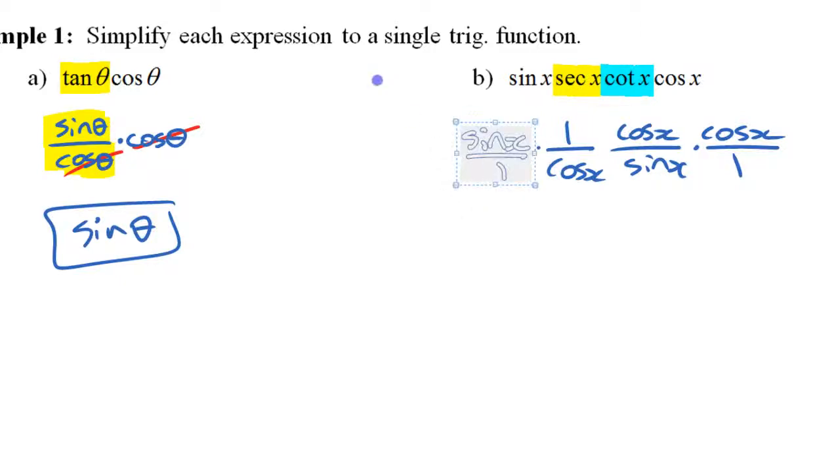And then you can see if there's anything that you can simplify. Well, if you multiply that all together, you're gonna have this sine on top, that sine on the bottom. You have this cos x and one of these cos x's on the top, and that leaves you with just cosine, right? Because everything else has turned into ones. So that simplifies to cos x.